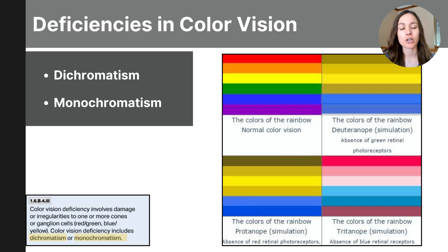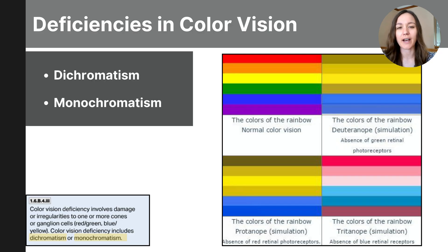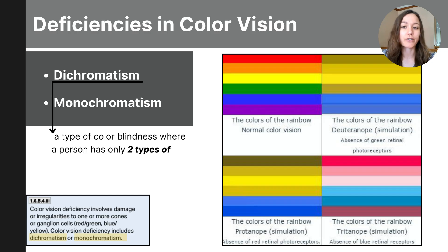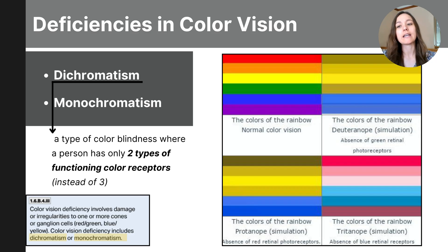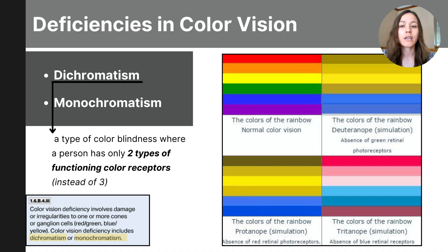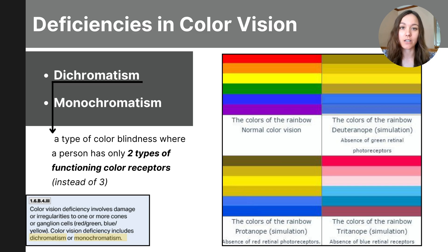Now that we've learned about different color vision theories, let's talk about color blindness. Color blindness is a condition where people have difficulty distinguishing between certain colors due to issues with their color vision system — it affects about 8% of men and about 0.5% of women globally. It's often inherited and more common in males due to its genetic link to the X chromosome. Dichromatism is a type of color blindness where a person has two types of functioning color receptors or cones instead of the usual three. If the individual is lacking either the red or green cone, this makes it difficult to distinguish reds from greens. A lack of a blue cone leads to difficulty distinguishing blues and yellows.